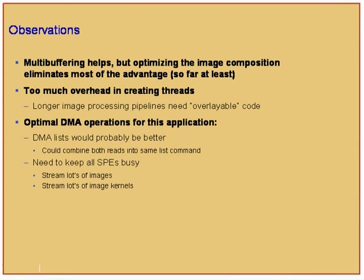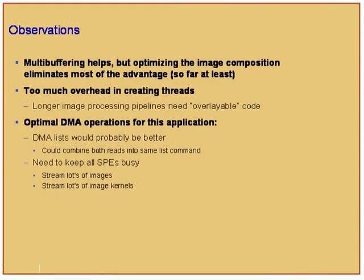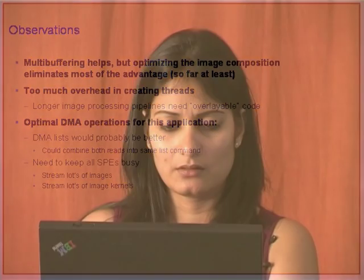Multi-buffering helps significantly. If you have an x86 PC, strongly recommended: create a native Linux partition and install SDK 2.0 natively rather than using VMware. VMware is good for getting started quickly, but for real workloads it's slow and consumes too much memory. Also, minimize thread creation — the fewer threads you create, the better the overhead.